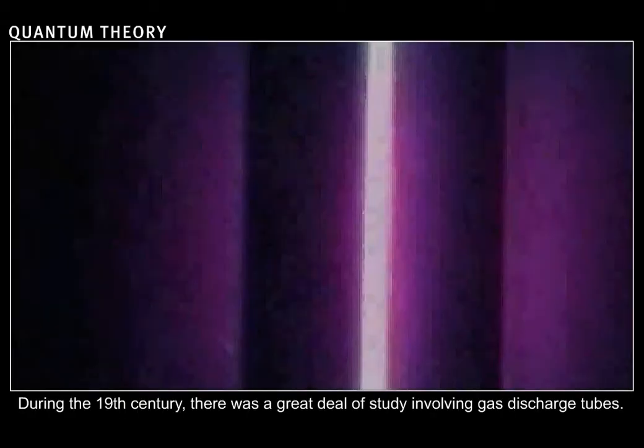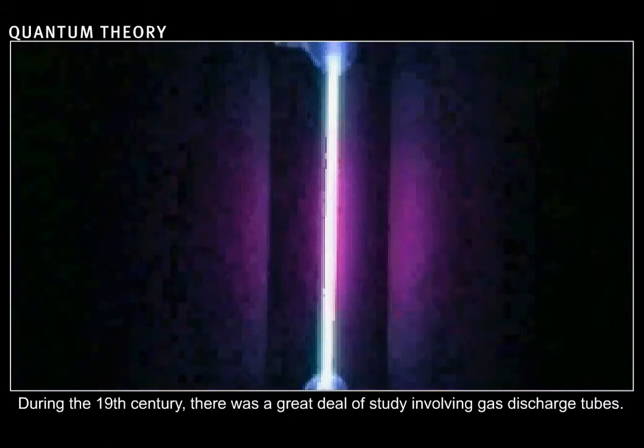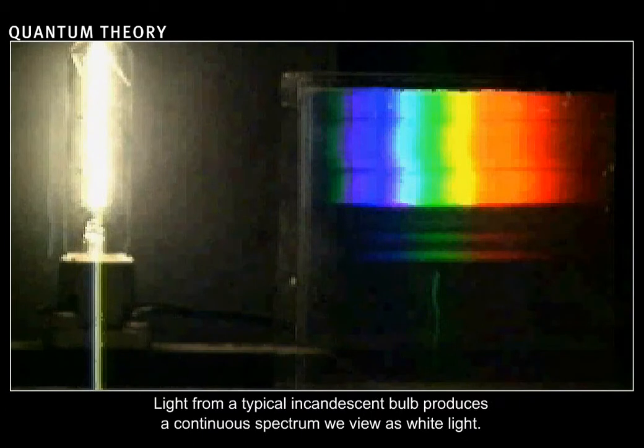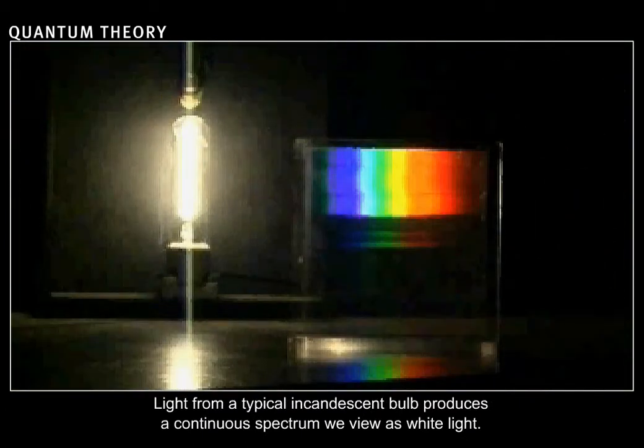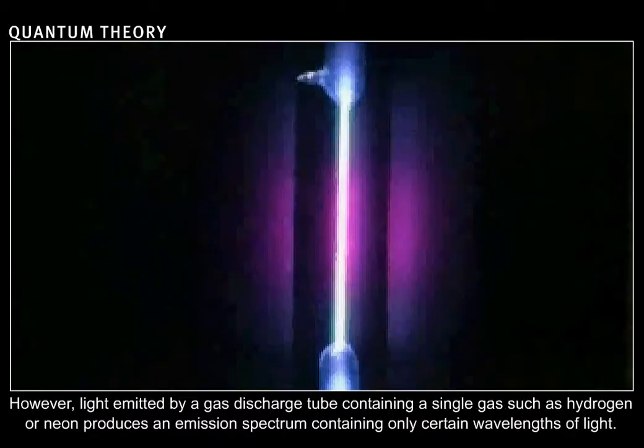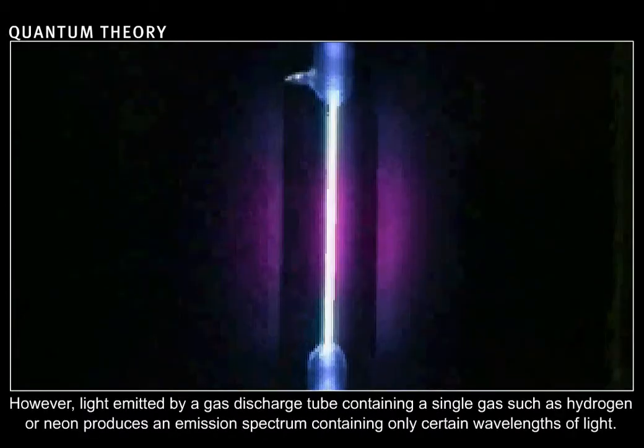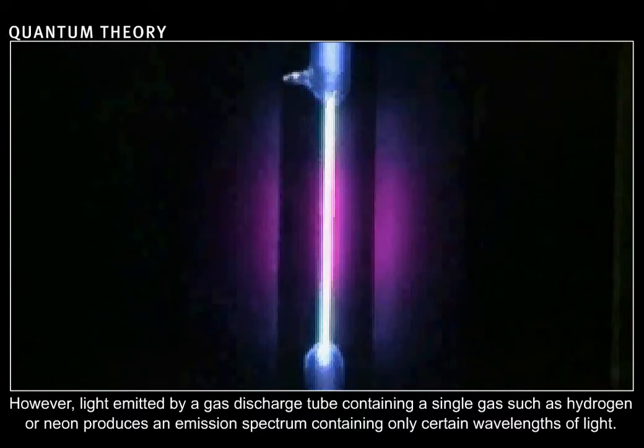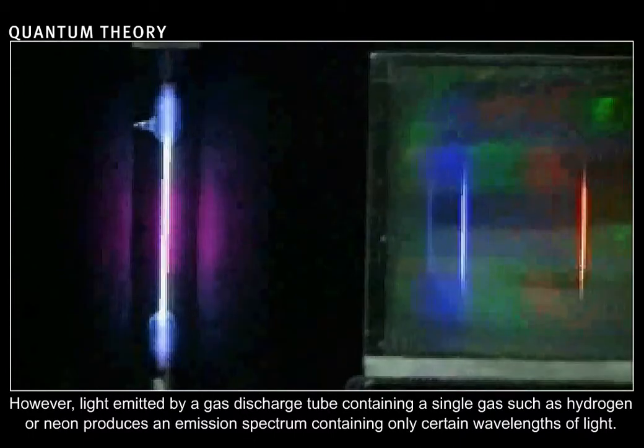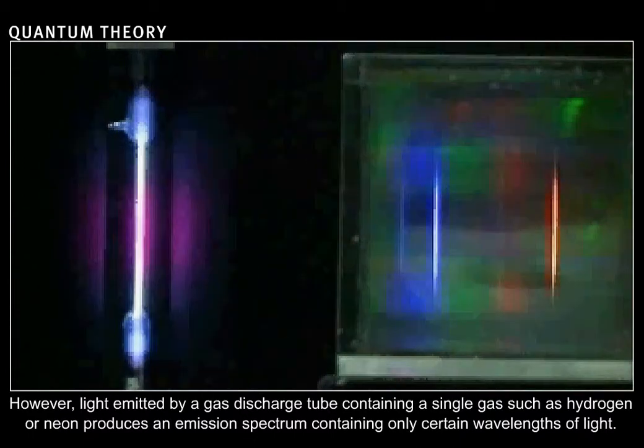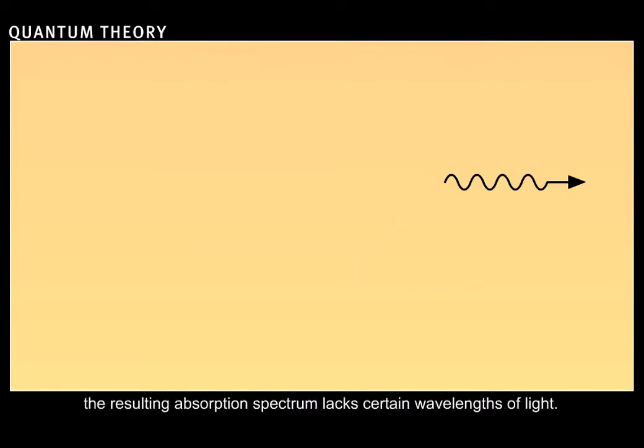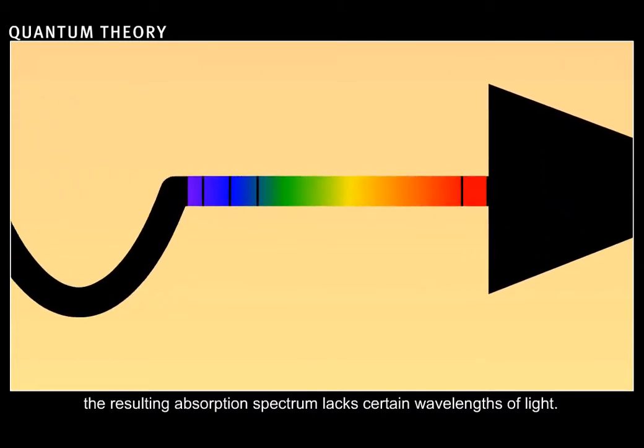In the 19th century, there was a great deal of study involving gas discharge tubes. Light from a typical incandescent bulb produces a continuous spectrum we view as white light. However, light emitted by a gas discharge tube containing a single gas, such as hydrogen or neon, produces an emission spectrum containing only certain wavelengths of light. If a white light is passed through one of these gases, the resulting absorption spectrum lacks certain wavelengths of light.